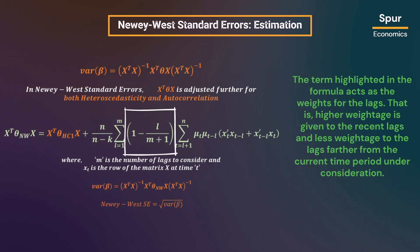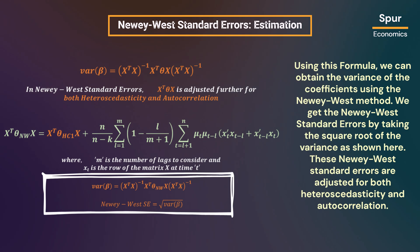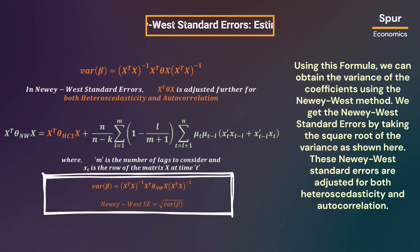The term highlighted in the formula acts as the weights for the lags. That is, higher weightage is given to the recent lags and less weightage to lags farther from the current time period under consideration. Using this formula, we can obtain the variance of the coefficients using the Newey-West method. We get the Newey-West standard errors by taking the square root of the variance, as shown here. These Newey-West standard errors are adjusted for both heteroscedasticity and autocorrelation.